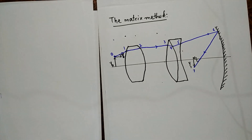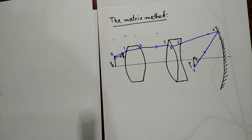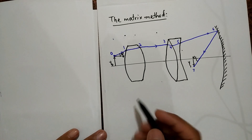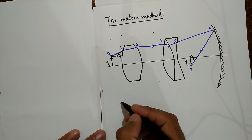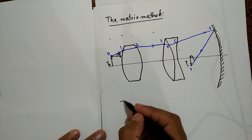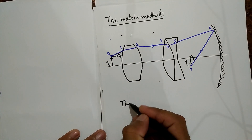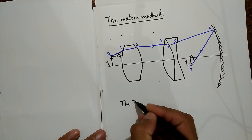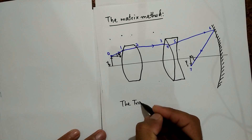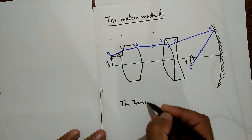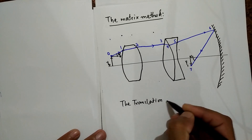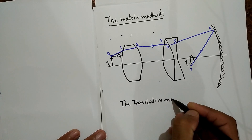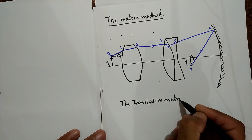First, we are going to find the matrix for translation of light rays — the translation matrix.